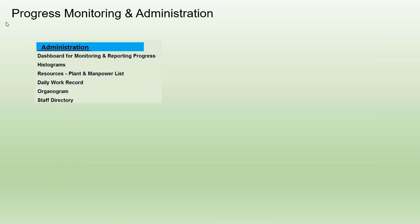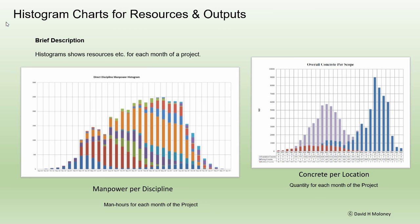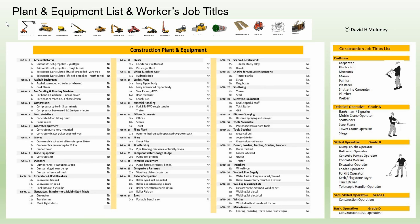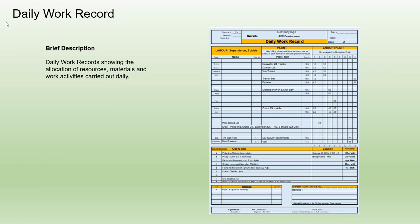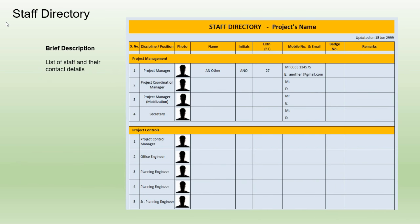Administration. A progress dashboard is used for monitoring and reporting. Histograms show resources and outputs for each month of a project. Resources, plant, and manpower lists, and daily work records are maintained. An organogram shows the line and lateral relationships between the various team members and their relative positions in the site organization. A staff directory is also provided.